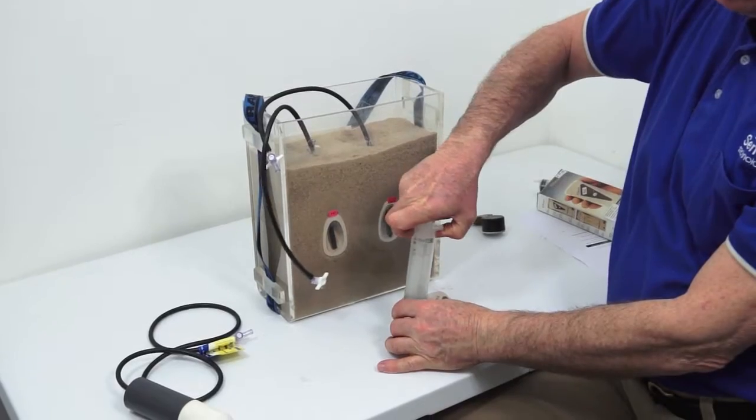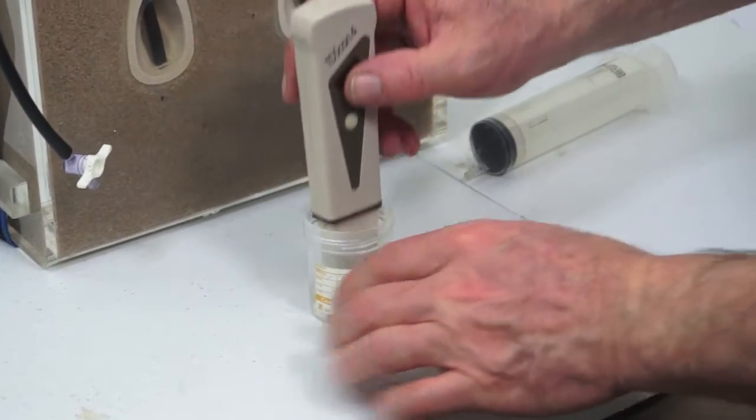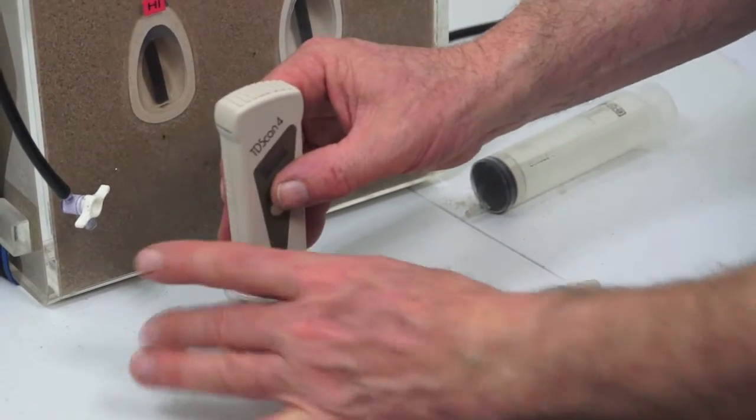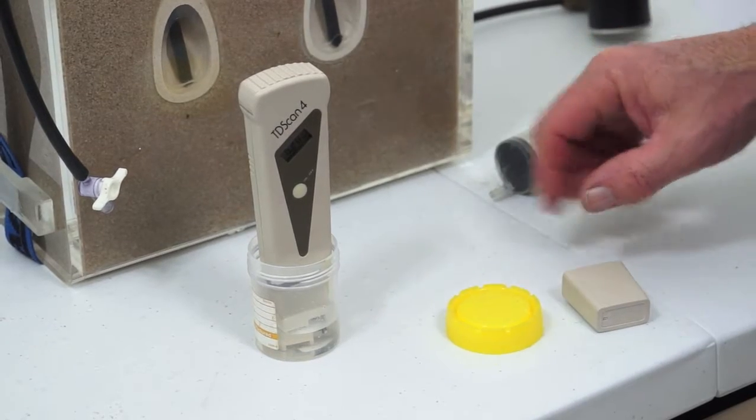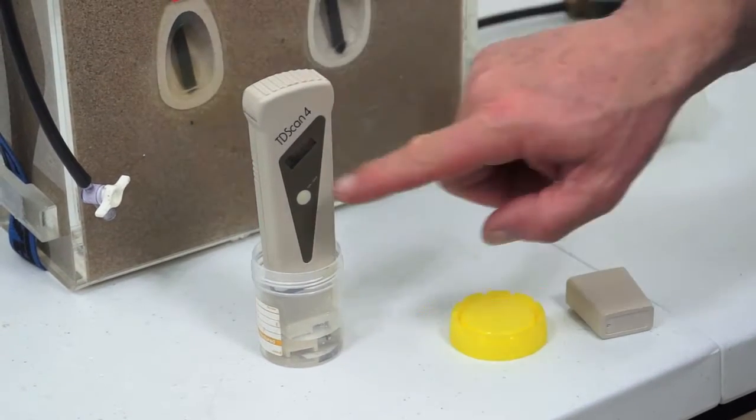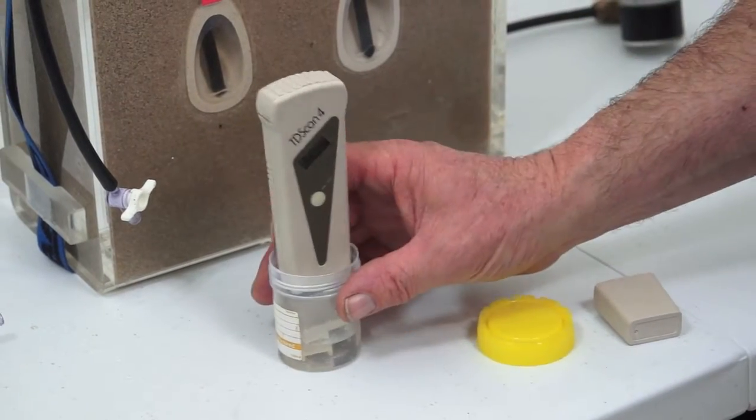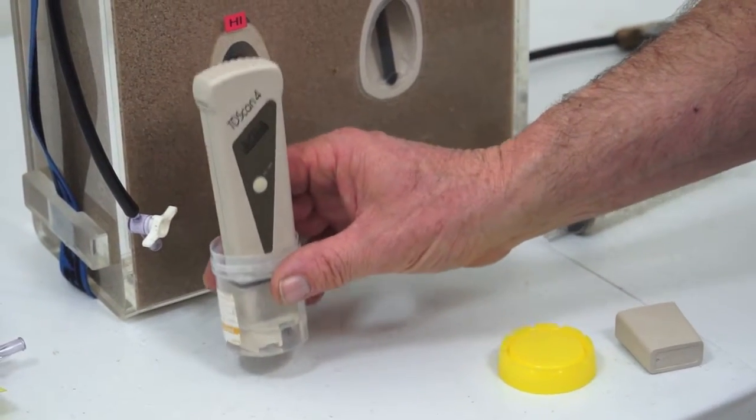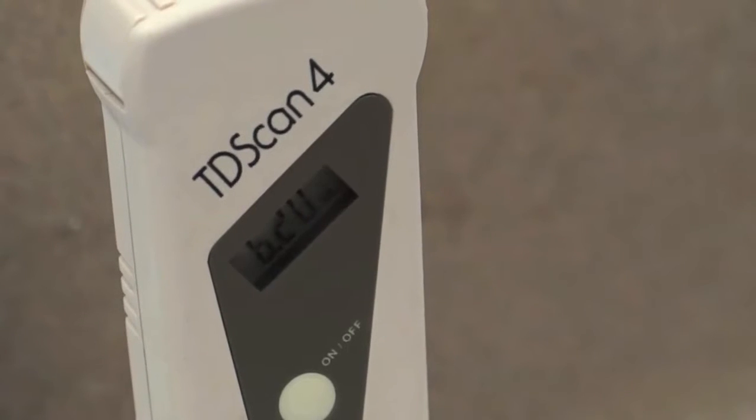We then take our EC meter and we make sure that the solution is covering both electrodes and, if there's one obvious there, a temperature sensor below it. And we wait for the measurement that will be at this scale here to stabilize. This will normally happen pretty fast. And we notice that the measurement at the moment for this solution, which we made up, is 6.2 decisiemens. That's quite a saline solution.